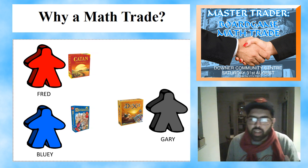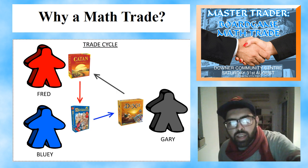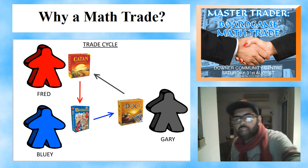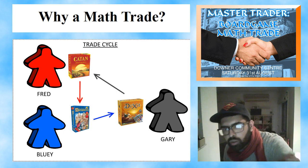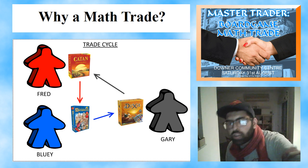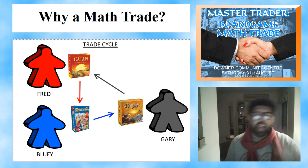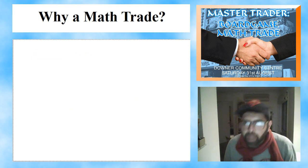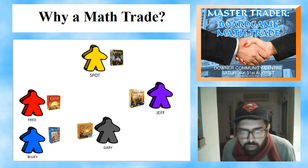And then if we're lucky enough, Gary is happy to trade his Dixit for Catan — so you have a trade cycle going. The arrows represent what you're happy to trade a game for. So Fred is happy to trade his Catan for Cocks On — that's why you have an arrow going that way. You have this loop going — perfecto! But obviously there's more than three board gamers in the world.